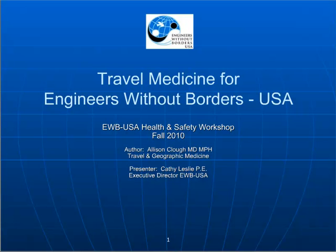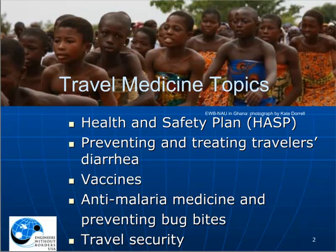Hello, I am Cathy Leslie, the Executive Director of Engineers Without Borders USA. The health and safety of our volunteer members is of utmost concern, and that is why we have chosen to focus this webinar on travel medicine for our traveling members. Over the next hour, we will talk about the Health and Safety Plan, or HASP, and how it helps you plan a safe and successful project. We will discuss four important travel health and safety topics in detail: diarrhea, vaccines, malaria, and security. Please note that this is not a comprehensive review of travel medicine.